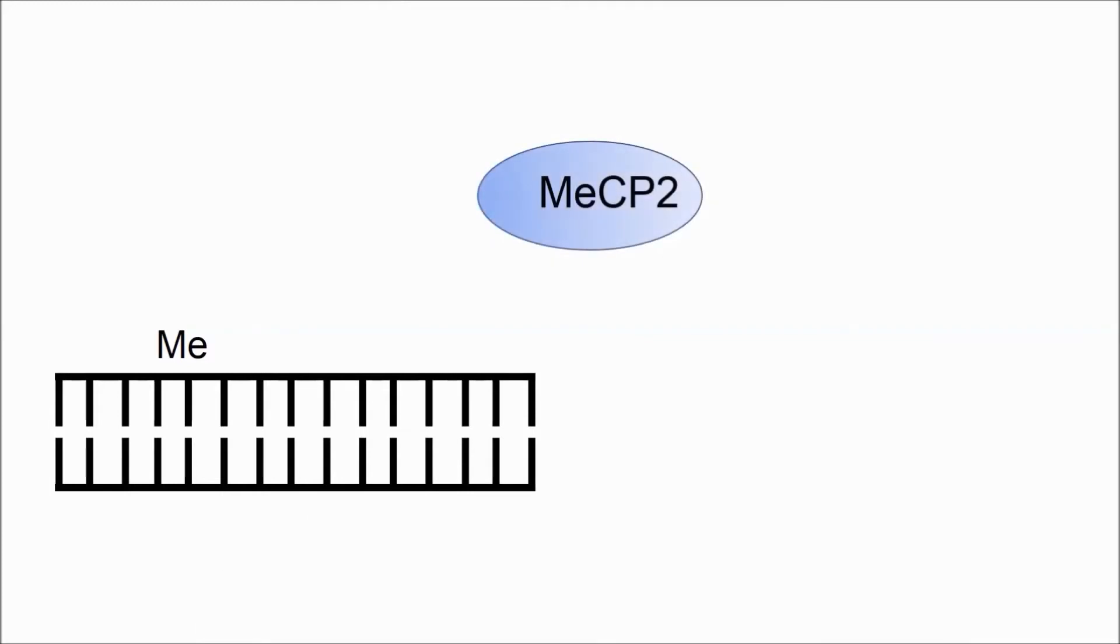What is MeCP2? MeCP2 is a gene that instructs cells to produce a protein also called MeCP2. The MeCP2 protein regulates the production of other dozens of genes by attaching to DNA and either increasing or decreasing the amount of those genes produced in the cell.